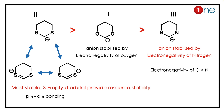Anion stability is dictated by the fact that more electronegative atoms will stabilize the anion more. You might make the mistake of thinking oxygen will stabilize the anion more, but there is a new factor: the d-orbital. Sulfur has empty d-orbitals, so it provides extra stabilization through resonance — a kind of p-d pi bonding. The anion lone pair enters the d-orbital, giving two extra resonance structures.